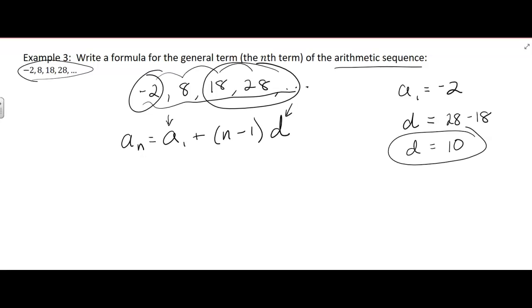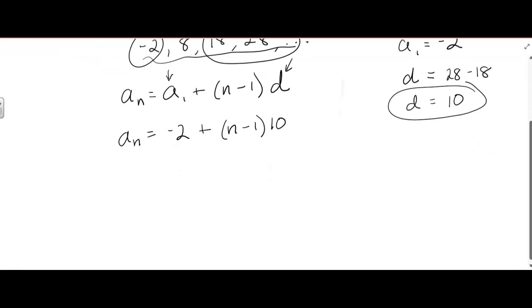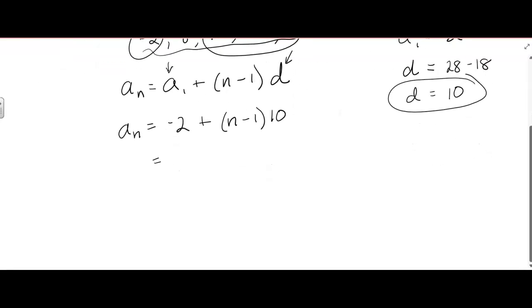Okay, then we can write a sub n equals the first term, negative two plus n minus one times 10. Now, they could leave it that way, but they probably are going to simplify it. All right, so we're going to distribute, and then I'm going to combine like terms and get negative 12 plus 10d. Or they might even write 10d plus, they'd probably write minus 12.